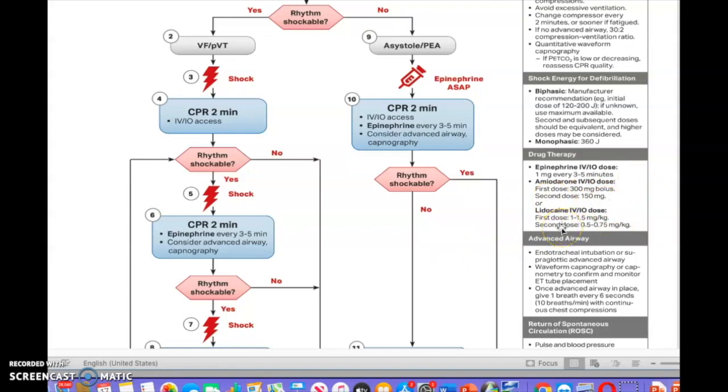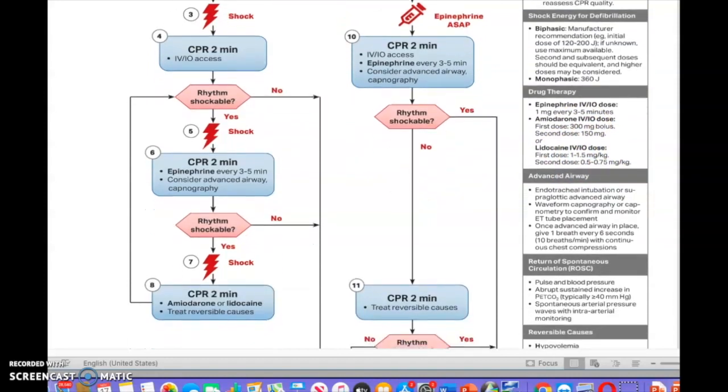Or you can give lidocaine. You can give the first dose of lidocaine one to one point five milligrams per kilogram, or the second dose is 0.5 to 0.75 milligrams per kilogram. That's important to know guys. That's always on the test for the ACLS course.